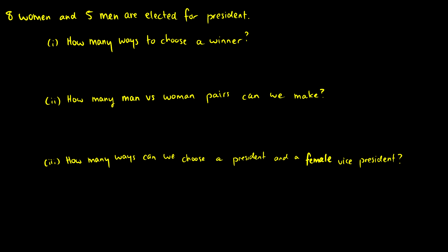So how many ways is there to choose a winner or a president? We look and say, okay, there's eight women we can choose and there's five men we can choose. But this is eight women or five men, so we use the rule of sum to say look, there's 13 ways we can choose a winner.